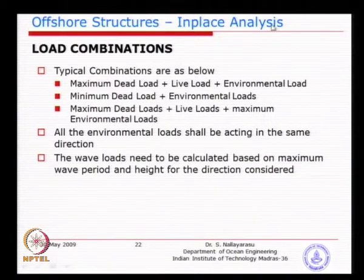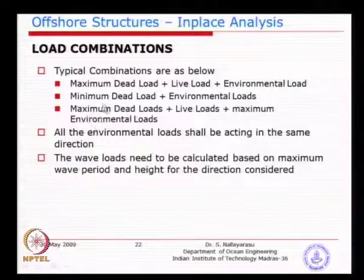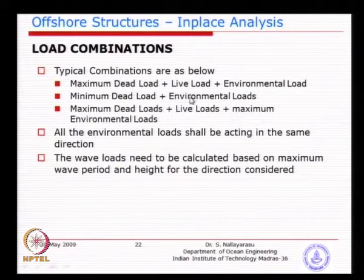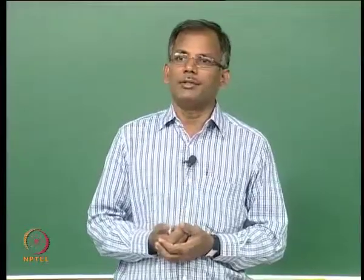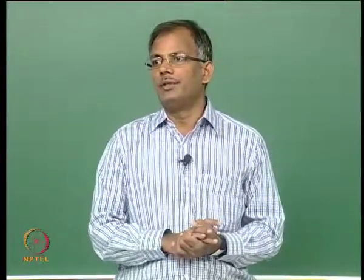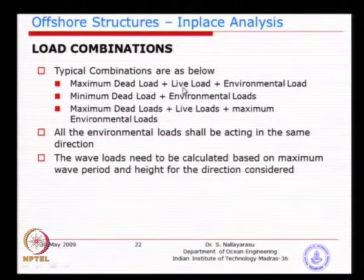The second combination — minimum dead load and removing the live load — produces a minimum compression effect on one side, meaning the tension effect will be higher on the opposite side. The idea behind minimizing gravity loads is that it could potentially cause more tension load because the horizontal load is not minimized. The live load is removed because it may exist at some times and not others. For example, during storm conditions you may not be able to have live loads, and during storm you may actually evacuate or remove some loads.